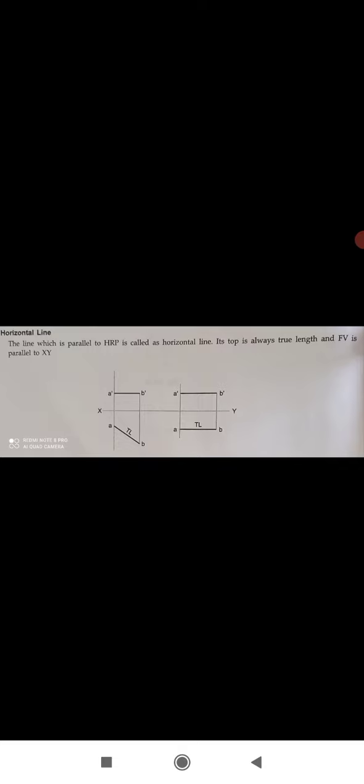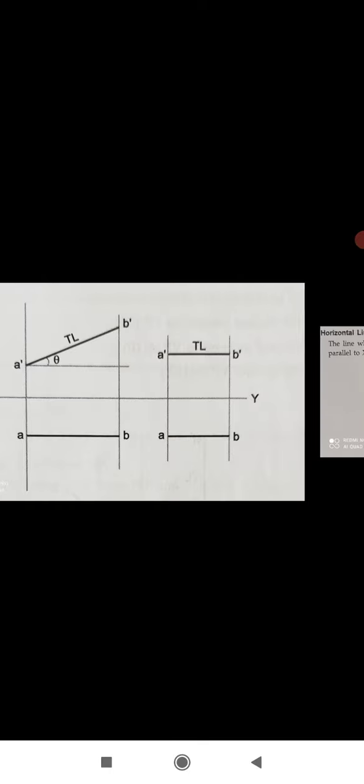The first type is the horizontal line. A line which is parallel to the HRP (Horizontal Reference Plane) is called a horizontal line — as the name indicates, it is parallel to the HRP. Its top view is always true length, and its front view is parallel to the XY axis. As shown in the diagram, above the XY is the front view and below the XY is the top view.